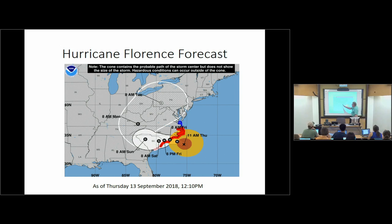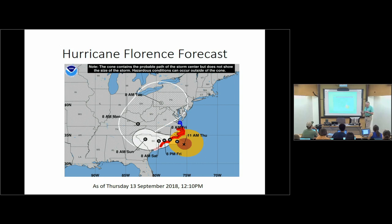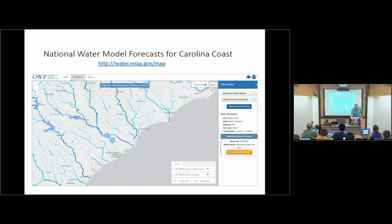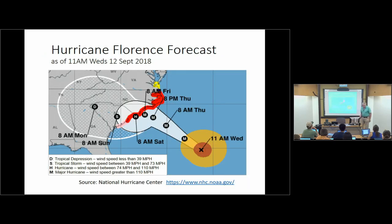The forecast is now tracking the motion of the hurricane further inland. The H stands for hurricane with wind force between 75 and 110 miles an hour; previously the M stood for major hurricane, meaning wind velocities over 110 miles an hour. One of the good things is this has diminished a bit.